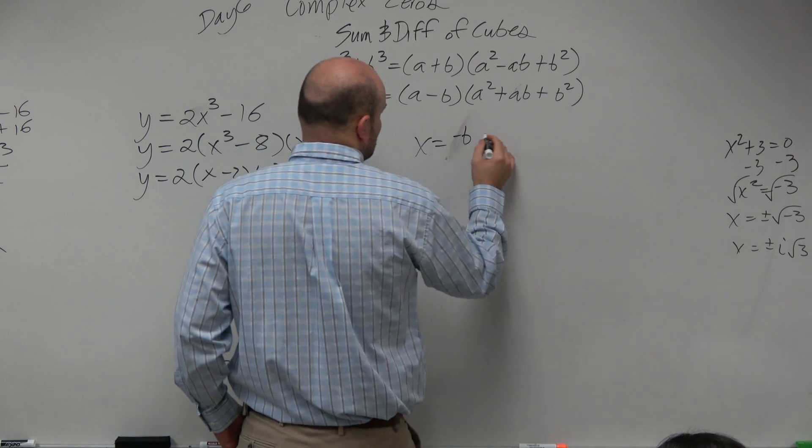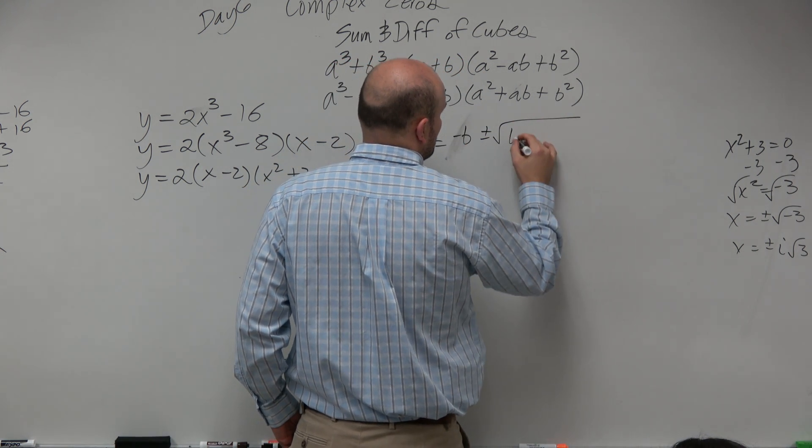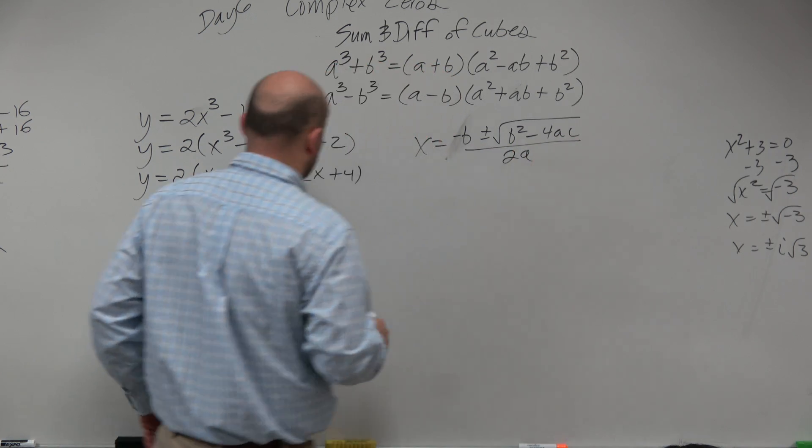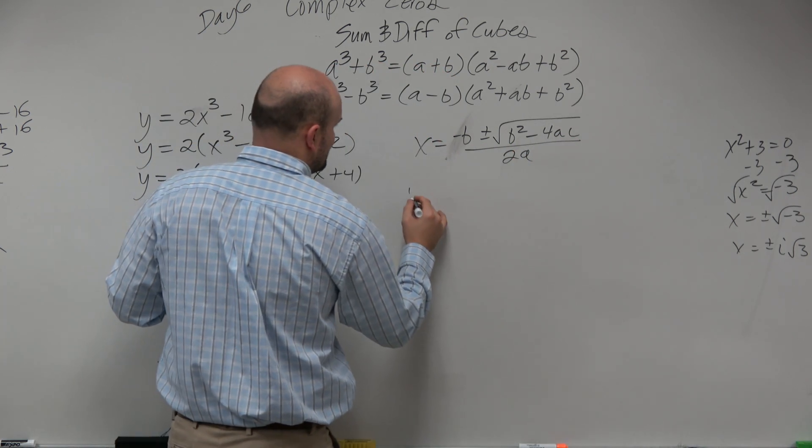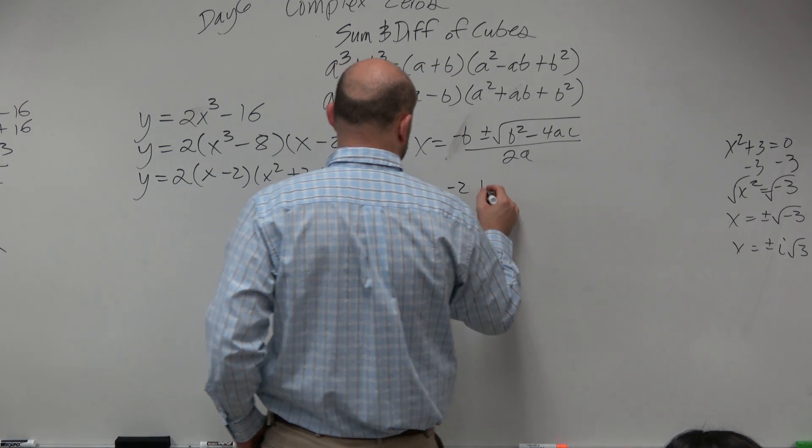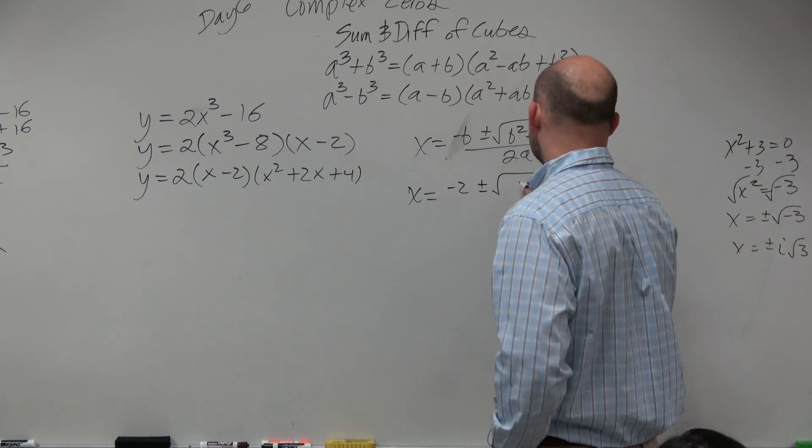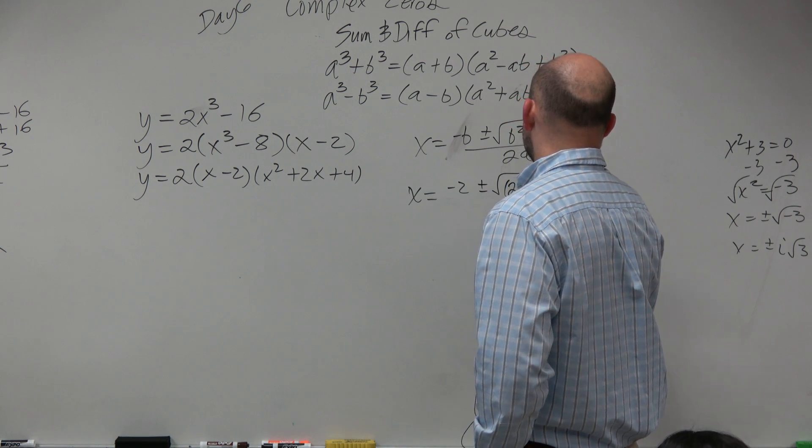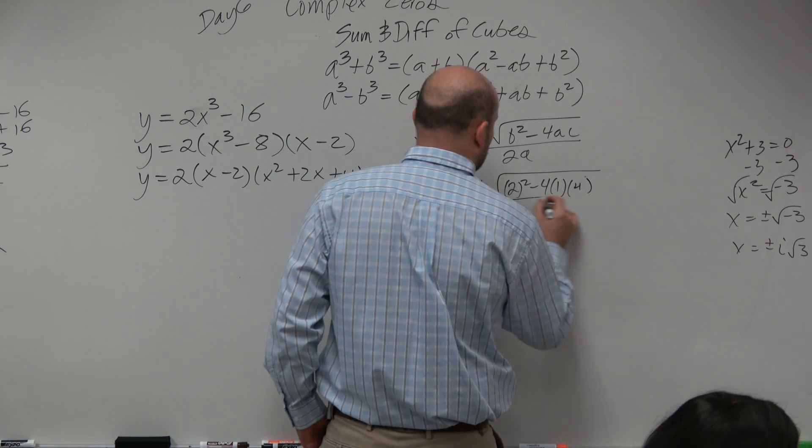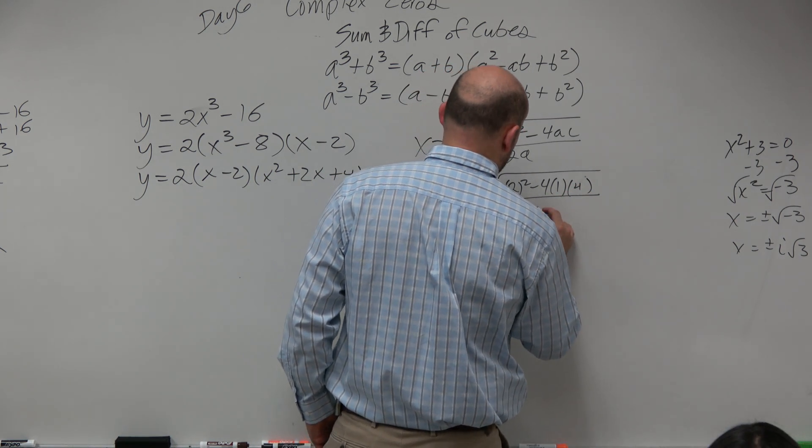So remember, guys, opposite of b, plus or minus square root, b squared minus 4 times a times c, all over 2a. So if I want to go ahead and solve this here, I'm going to have x equals opposite of b, which is negative 2, plus or minus the square root of 2 squared minus 4 times a times c, all over 2 times a.